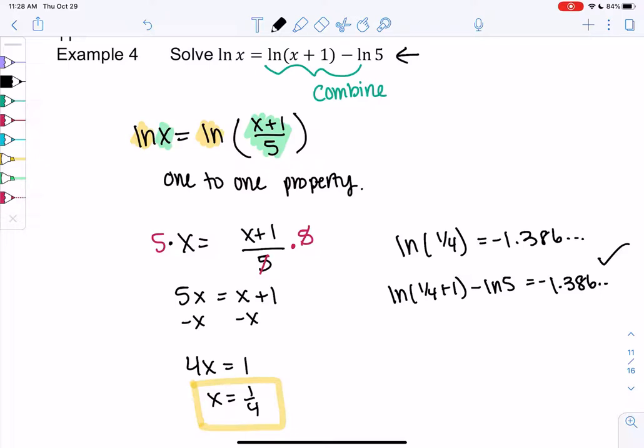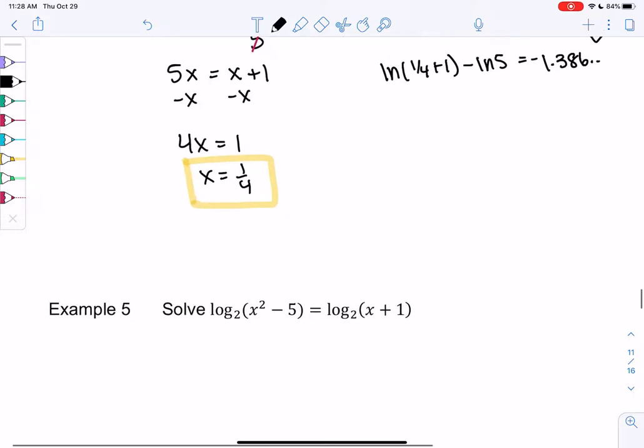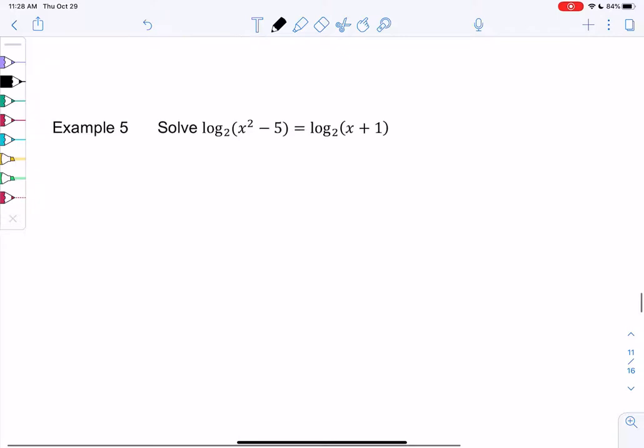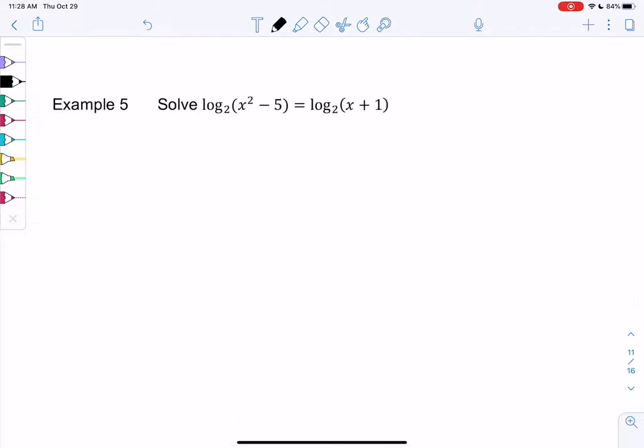Let's try another equation with logs. This one's a little harder to check because most calculators don't have log base 2. So log base 2 of x squared minus 5 equals log base 2 of x plus 1.